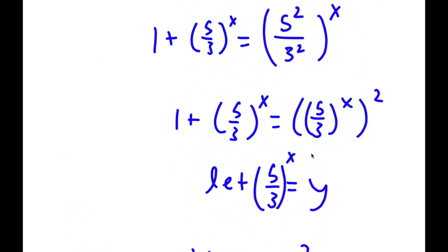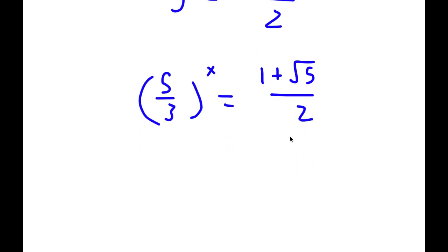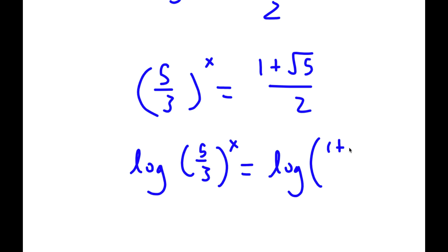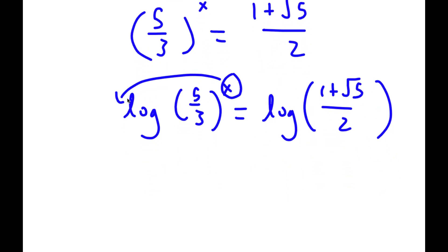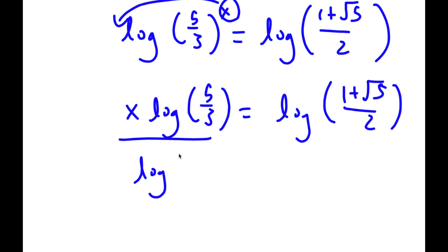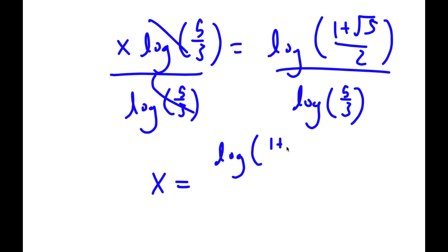Remember, we set 5 over 3 to the power of x equal to y. So if y equals this, then 5 over 3 to the power of x equals 1 plus the square root of 5 over 2. To solve this, I take the log on both sides, move the exponent to the front, giving x times log of 5 over 3 equals log of 1 plus the square root of 5 over 2. Dividing both sides by log of 5 over 3, I get x equals log of 1 plus the square root of 5 over 2, over log of 5 over 3.